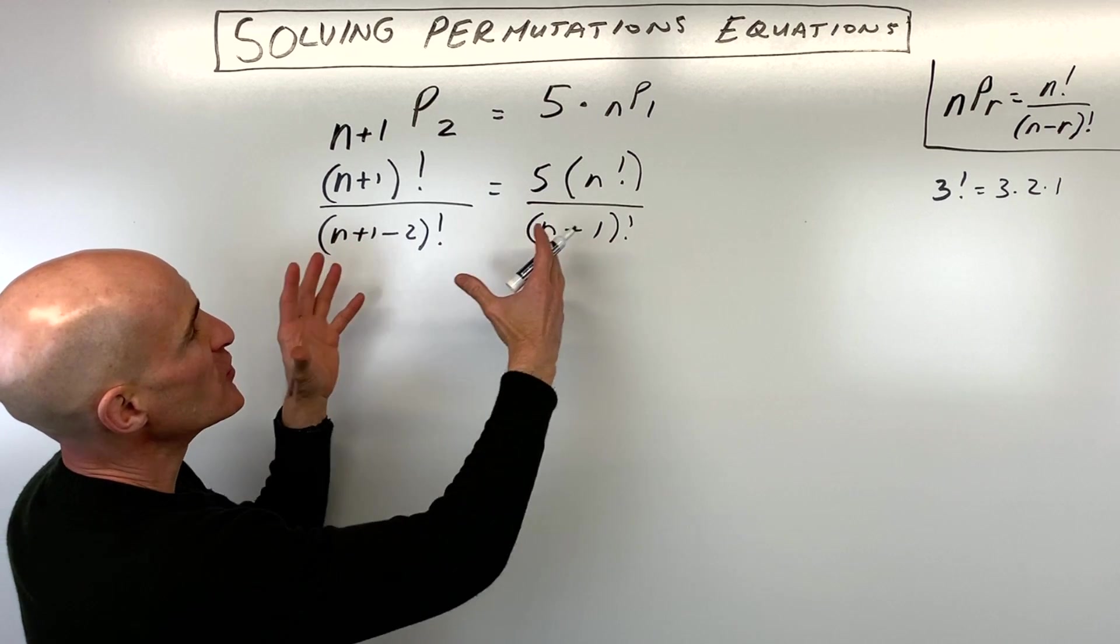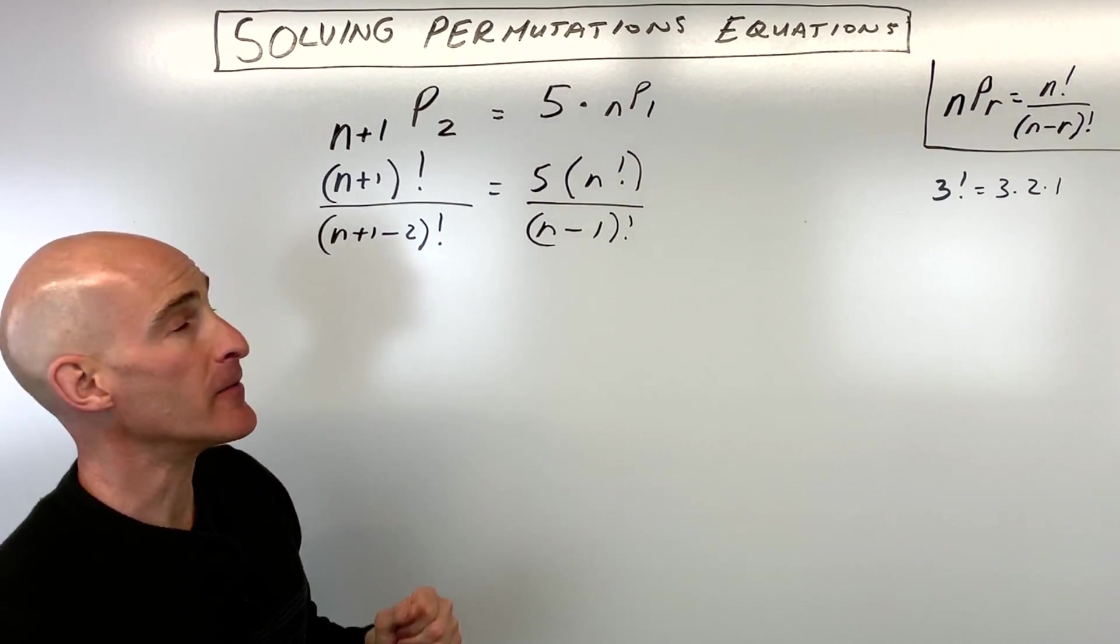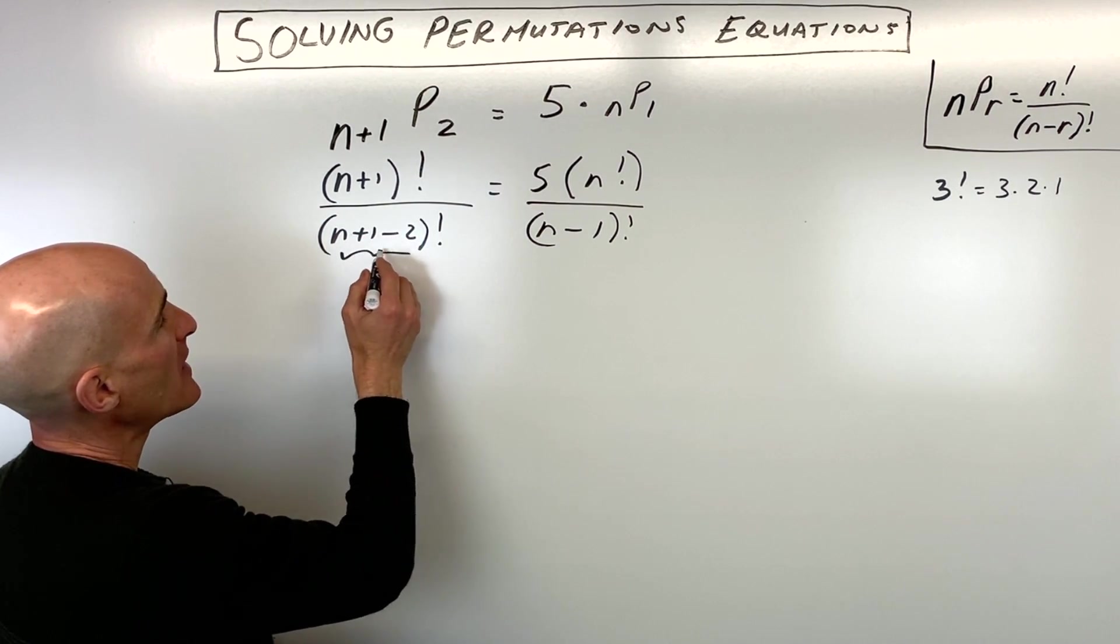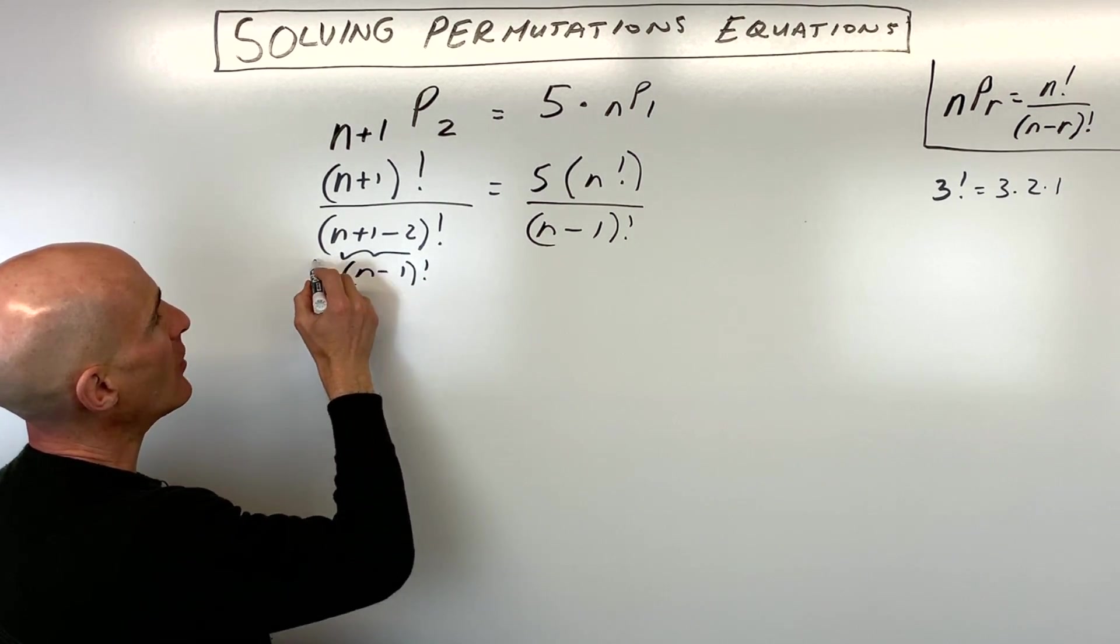Now we need to expand these further using what we know about factorials so we can solve for n. The first thing is that n plus 1 minus 2 is actually n minus 1 if we condense that down.